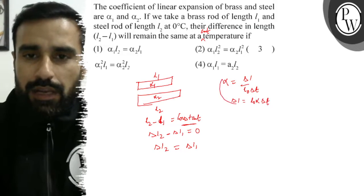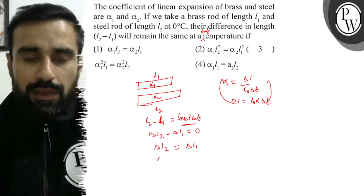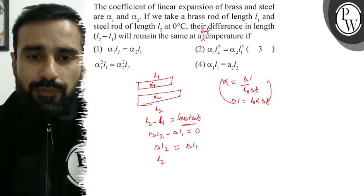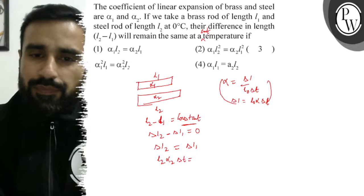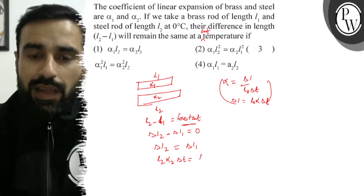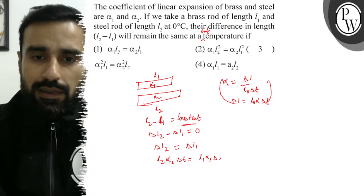Delta L2 will be L2 alpha 2 delta T, and delta L1 will be L1 alpha 1 delta T.